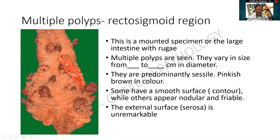The external surface — that is the back side — is the serosa, and it generally appears unremarkable. So these are multiple polyps in the rectosigmoid region. Generally we are supposed to identify the large intestine because there might be an adjoining rectum, and the rectum will be showing an anal tag of skin. By that we will definitely be able to say that it is a rectosigmoid specimen.